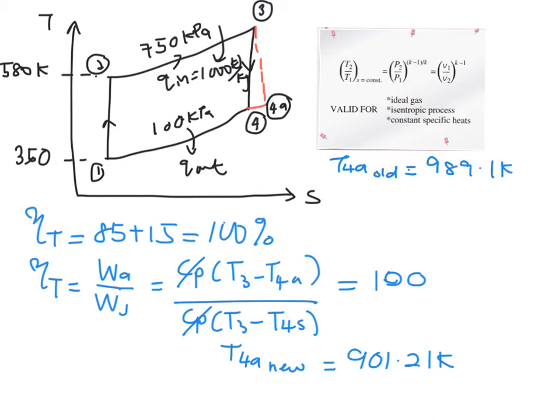So if you can mark it in your T-s diagram, this is your 989.1. And then when you have 100% efficiency, your T4a now is 901.21 Kelvin, which is slightly higher than your T4s.